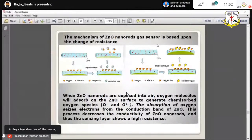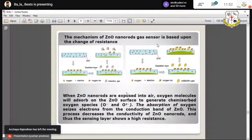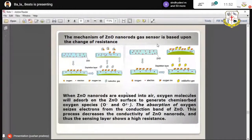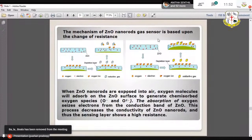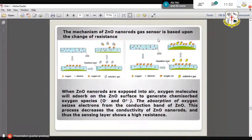Zinc oxide nanorods used as the gas sensor. When a zinc oxide nanorod is exposed in air or in oxygen molecules, it will absorb the zinc oxide surface to generate chemisorbed oxygen species, that is O minus or O2 minus. The absorption of oxygen seizes electron from the conduction band of zinc oxide.